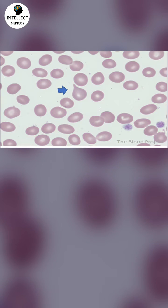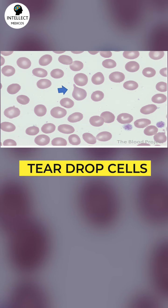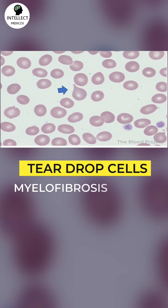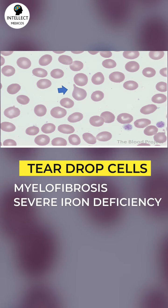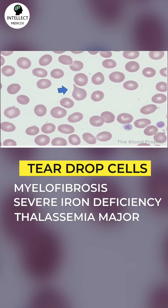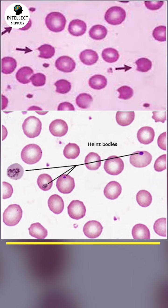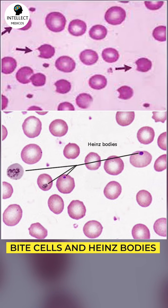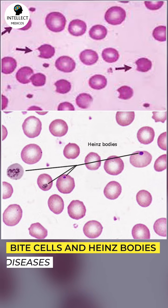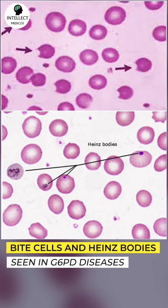The first slide shows tear drop cells, which are commonly seen in myelofibrosis, severe iron deficiency anemia, and thalassemia major. The second slide shows bite cells, and you can also see Heinz bodies, which are very typically seen in G6PD disease.